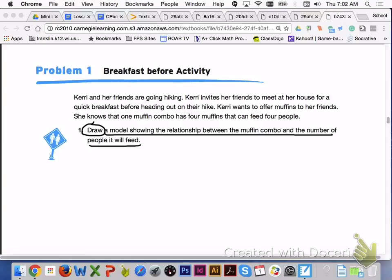Carrie and her friends are going hiking. Carrie invites her friends to meet at her house for a quick breakfast before heading out on their hike. Carrie wants to offer muffins to her friends. She knows that one muffin combo has four muffins that can feed four people.